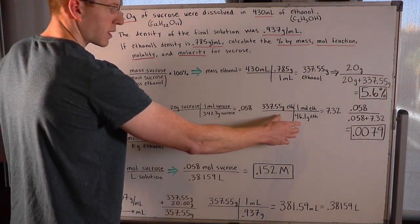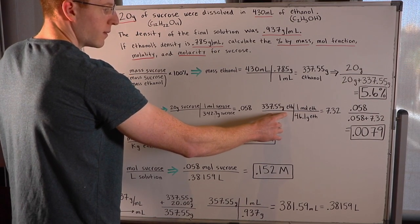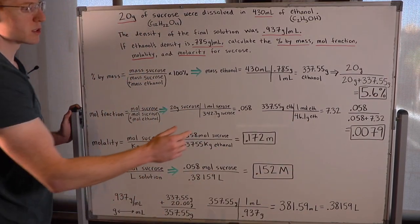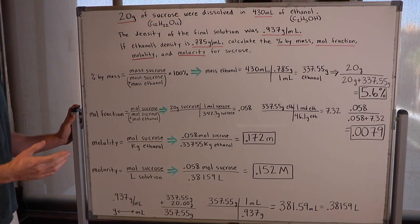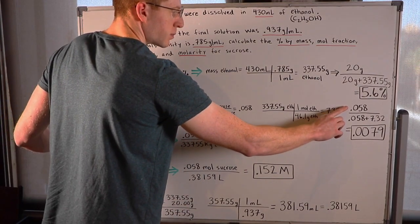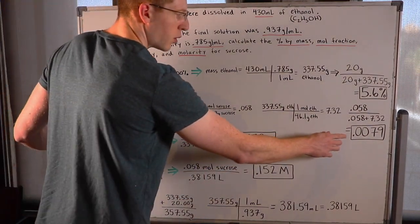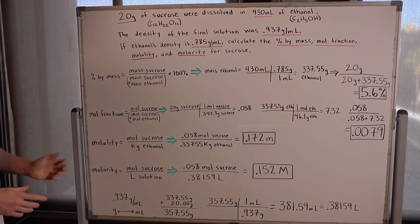Then I did the same thing for ethanol here. I know that I have 337.55 grams of ethanol now. And the molecular weight of ethanol is 46.1 grams. So with the same calculation, I find that I have 7.32 moles of ethanol. I went ahead and just plugged in my molar amounts into this formula. And I found that the mole fraction for sucrose in this solution is 0.0079.